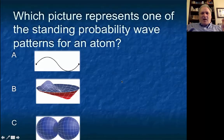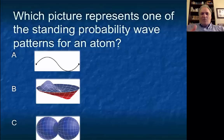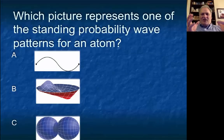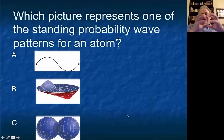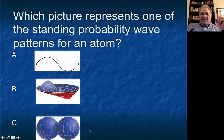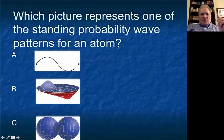Which picture represents one of the standing probability wave patterns for an atom? This tests whether you recognize what orbitals look like. Orbitals are standing probability wave solutions to the Schrödinger equation — predictions of where you'd find an electron around the nucleus. The only picture that looks like an orbital is C, which is a P-type orbital — dumbbell shaped. S orbitals are spherical; P orbitals are dumbbell-shaped; D orbitals are cloverleaf-shaped. The right answer is C.